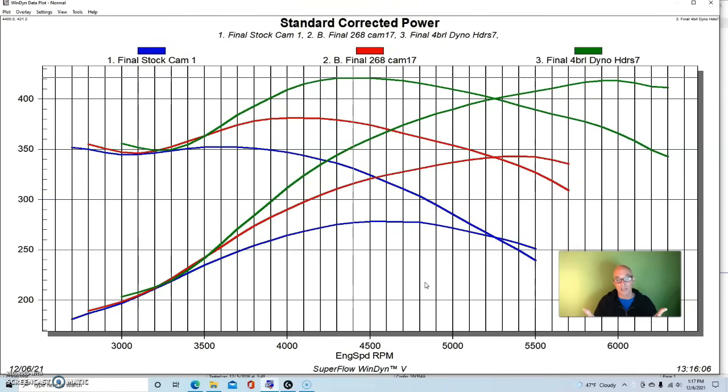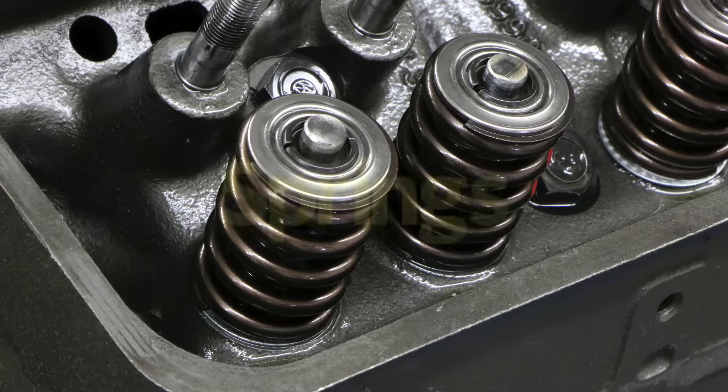But what we could do is we did mill them, and also they were treated to a very important multi-angle valve job on the 1.94/1.50 valves that we included in that combination. So milled and a good valve job on the Vortec heads. They were also treated to the right valve spring combination to ensure that we could run the camshaft that we eventually ran.